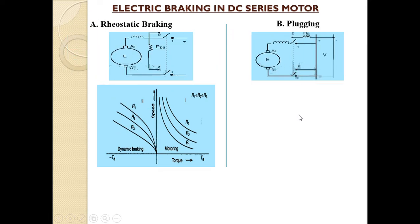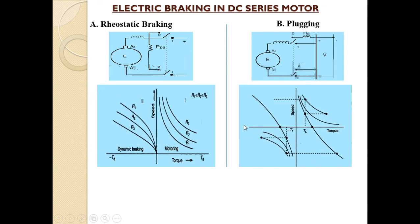For plugging in the DC series motor, we interchange the polarities of the supply. The graph shows all four quadrants of operation. Plugging is involved in either the second or fourth quadrant operation only, but the diagram shows the first and third quadrants as well, because the graph illustrates how torque changes from positive to negative polarity and how speed changes from normal rotation to opposite-side rotation.